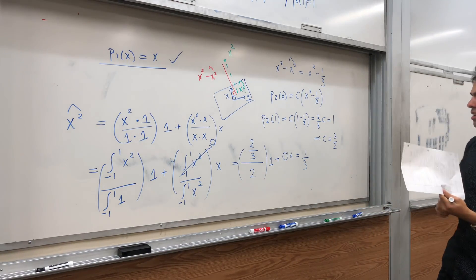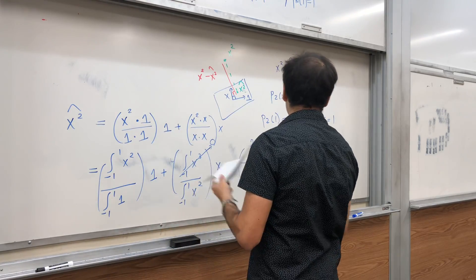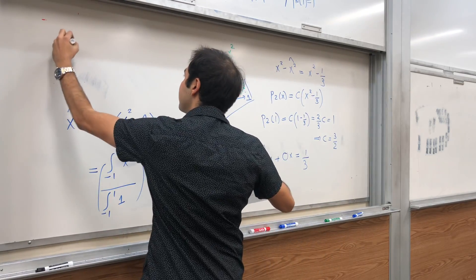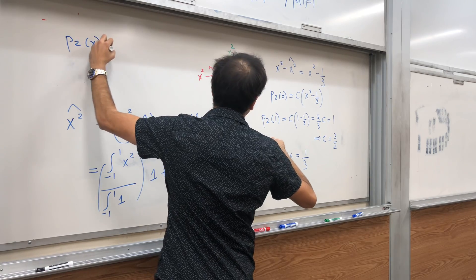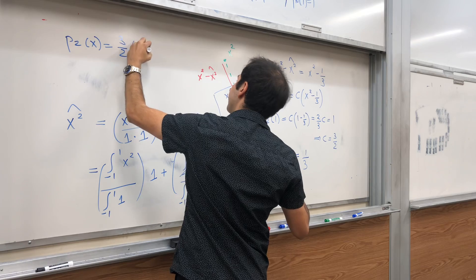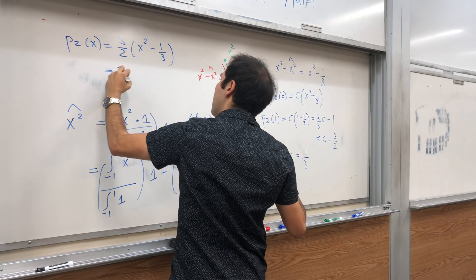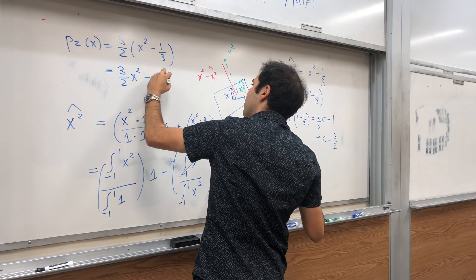And this then gives you your P2. Let me see if I ran out of space. So P2 of x is 3 halves times x squared minus 1 third. And if you want, it's 3 halves x squared minus 1 half.